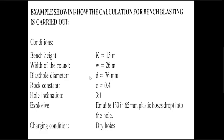This example shows the calculation for bench blasting. The conditions are: bench height 15 meters, width of the round 26 meters, blast hole diameter 76 mm, rock constant 0.4, hole inclination 3:1. The explosive to be used is Emulite 150, and a 65 mm plastic hose is dropped into the hole cartridge.